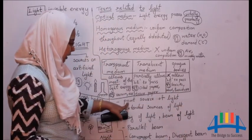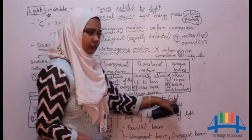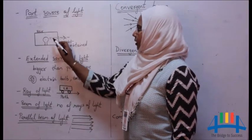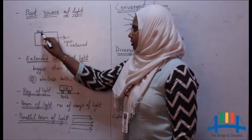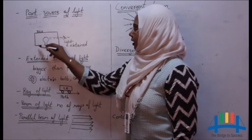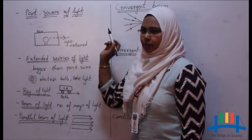Now let us see what is point source of light. The light obtained by keeping the bulb inside the box is called point source of light.